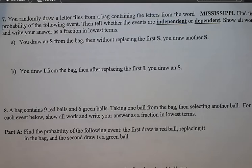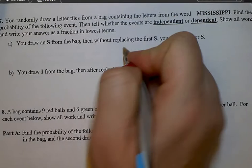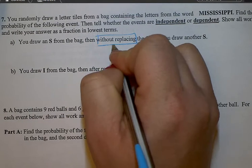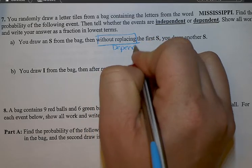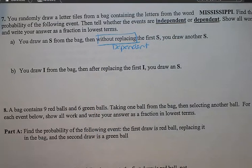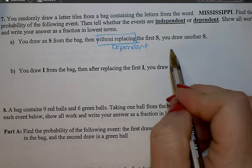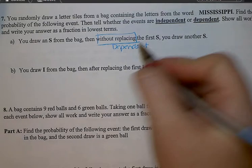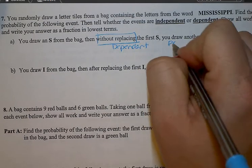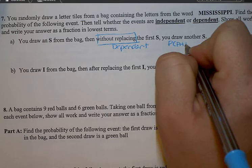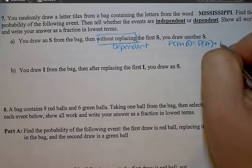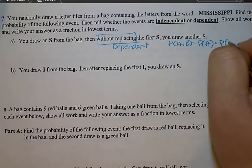You draw an S from the bag and then without replacing it — and that tells us it's going to be dependent — and then you draw another S. You're drawing S's consecutively, so we have a dependent event. The probability of the two events occurring is the probability of the first times the probability of the second, assuming the first occurs.